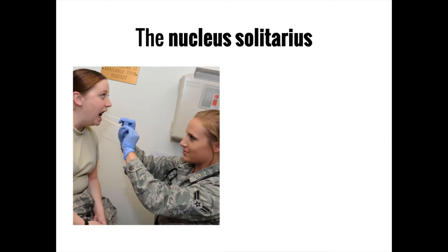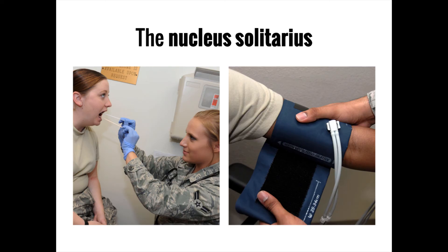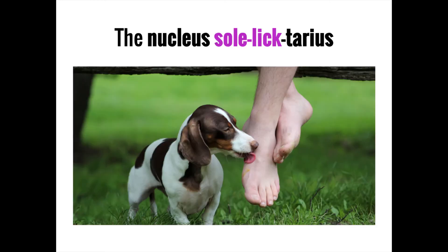The medulla also contains the nucleus solitarius, which receives input from the tongue about taste and is involved in the gag reflex. In addition, the nucleus solitarius is involved in the baroreceptive reflex that regulates blood pressure. A lesion here can result in a characteristic combination of loss of taste, as well as instability of blood pressure and other vital signs. You can remember this by imagining being asked to lick the sole of someone's foot — this would make you want to gag and would cause your heart rate and blood pressure to go up — reminding you that the nucleus solitarius is involved in taste sensation, the gag reflex, and regulation of vital signs.